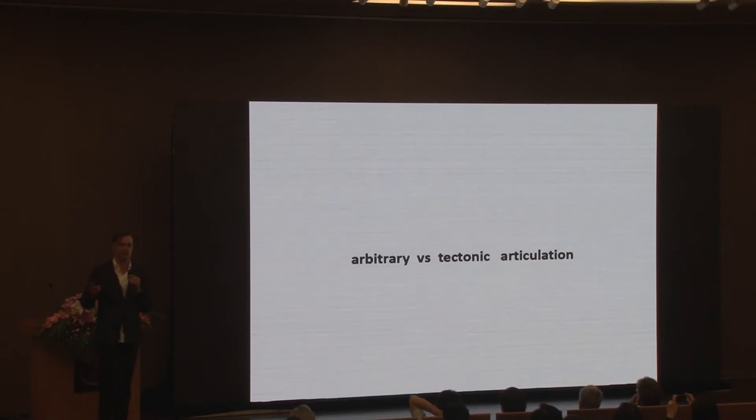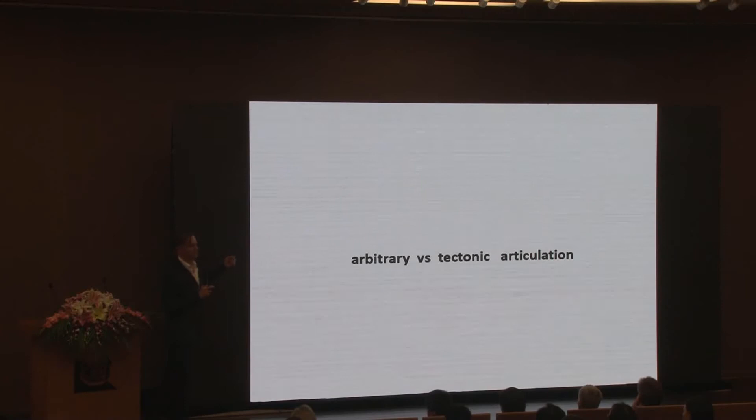So: arbitrary versus tectonic articulation. We need articulation. We could do it in an arbitrary way like the chessboard. But why not — and this has always been done in the history of architecture — use and double-functionize what's already coming with respect to the functional and technical apologies, and reduce that.